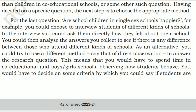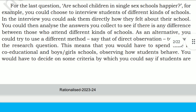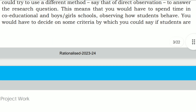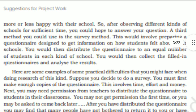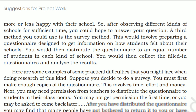As an alternative, you could try a different method — direct observation — to answer the research question. This means you would spend time in co-educational schools observing how students behave. You would have to decide on some criteria by which you could judge whether students are more or less happy with their schools. By observing different kinds of schools for sufficient time, you could hope to answer the question.